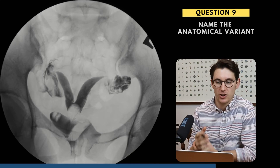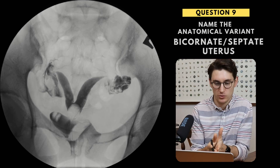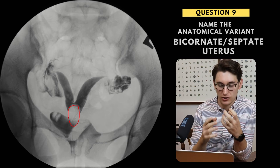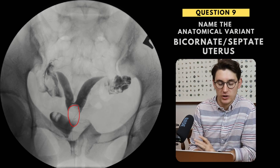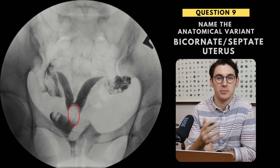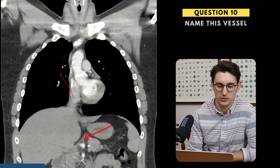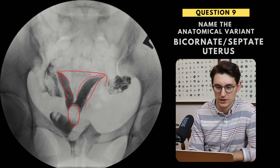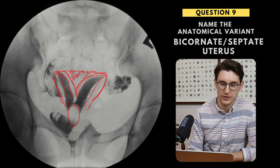Our penultimate question, number nine — we're asked to label the normal anatomical variant here. The type of image is a hysterosalpingogram. We're putting a bulb into the cervical canal, injecting dye and taking a radiograph to look at the endometrial cavity. What we can see is either a bicornuate uterus or a septate uterus. The reason we can't tell which is that we can't assess the myometrium — only the cavity. We have two uterine cavities: one on the left and one on the right. Either the uterus has endometrium forming a septum within it, or we've got two separate uteri with no myometrium between them — making it a bicornuate uterus.